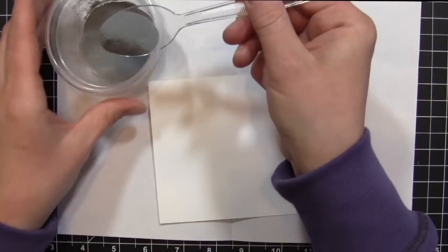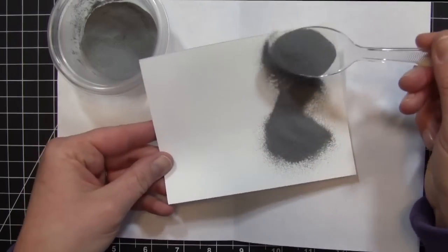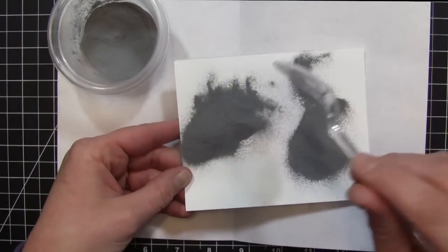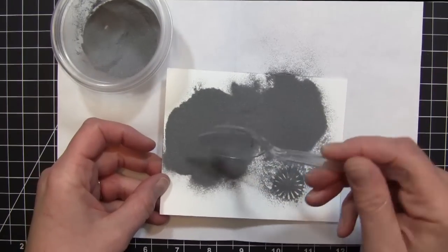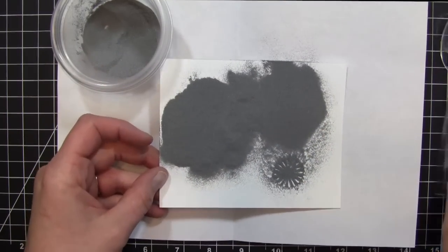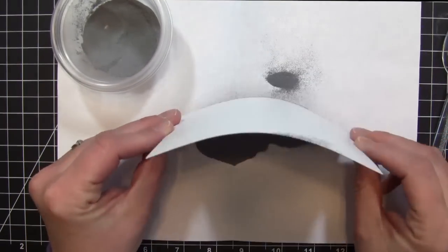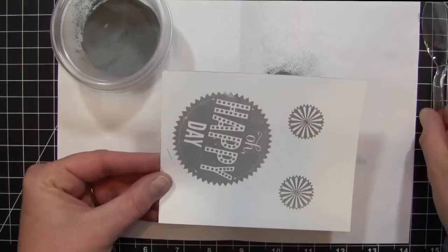Once I have that stamped out, I'm using silver embossing powder and sprinkling that over my images. I'll shift that around on my cardstock to make sure everything gets covered and tap it out onto my piece of scrap paper.